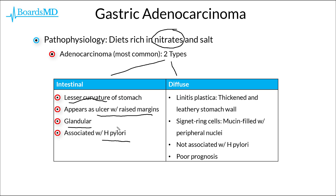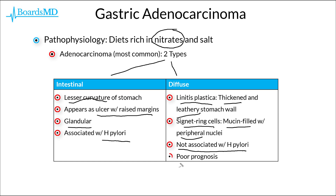In contrast, in the diffuse subtype of gastric adenocarcinoma, endoscopy classically shows linitis plastica, where the stomach wall is diffusely thickened and leathery in appearance. Biopsy during that endoscopy procedure will classically show signet ring cells, and for this reason the diffuse subtype is sometimes referred to as signet ring cell carcinoma. Unlike its intestinal counterpart, the diffuse subtype is not associated with H. pylori and unfortunately carries a very poor prognosis.